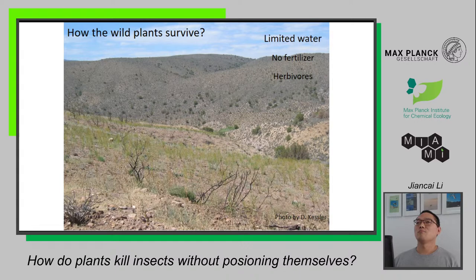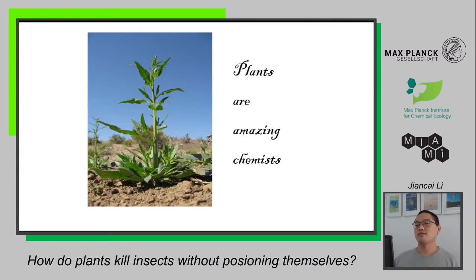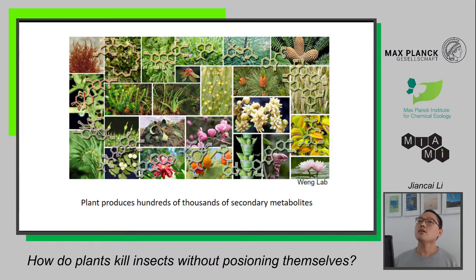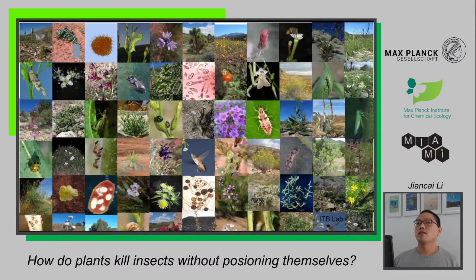The answer is simply that plants are made-in chemists. They produce hundreds or thousands of different specialized metabolites, also called secondary metabolites, because previously people thought they weren't essential for plant survival. But now we realize that's not always the case. Using these specialized metabolites, plants can defend against herbivores, call for alliances with natural enemies of herbivores, attract pollinators, and communicate with neighboring plants. They do everything using chemistry to solve problems caused by their sessile nature.